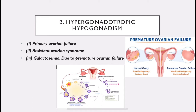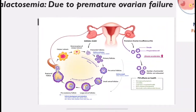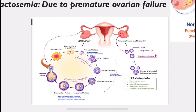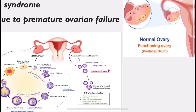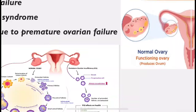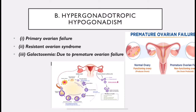Resistant ovarian syndrome occurs when there is a disturbance in the receptors of the ovarian follicle. Normally FSH causes follicle growth from primordial to Graafian follicle. In premature ovarian insufficiency (premature ovarian failure), the number of follicles is exhausted. In resistant ovarian syndrome, the receptors of the ovarian follicle are damaged and do not respond to FSH and LH even though secretion is normal, resulting in primary amenorrhea.